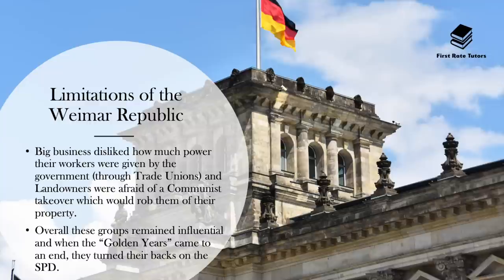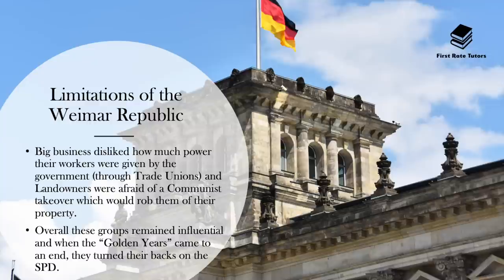Also, don't forget that one of the key tenets of very extreme left parties — for example, very communist parties — is this idea that the government should appropriate land, so people should not privately own property. Of course the SPD was very moderate and they didn't implement this idea. That being said, there were still many German landowners who were afraid of a communist takeover which would rob them of their property. So there were also lots of landowners who didn't support the SPD and would prefer to have a more right-wing government, even if that meant having a very extreme right government. Overall, these groups remained influential, and when the golden years came to an end, they turned their backs on the SPD and ultimately turned more to support right-wing leaders.